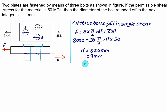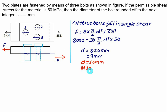A 9 mm series is not normally available, so we select diameter D = 10 mm, that is, we select an M10 bolt. M10 means a nominal diameter of 10 mm, giving a core diameter of 8.24 mm.